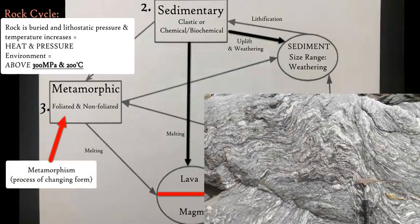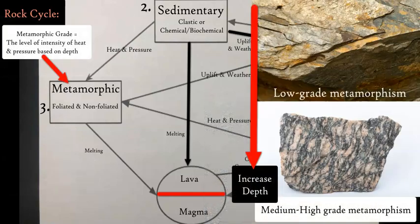A lot of heat, lots of pressure, and you're going to change the form and the shape of this rock and form a metamorphic rock, the third rock in our cycle. The two types are foliated and non-foliated.